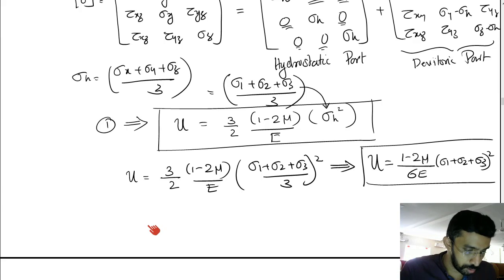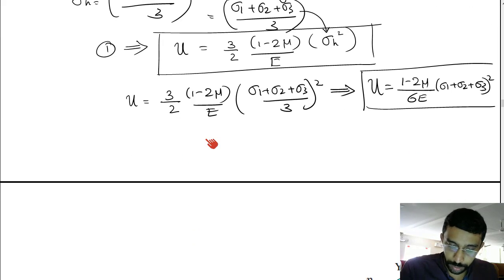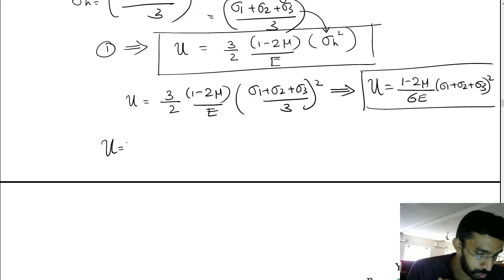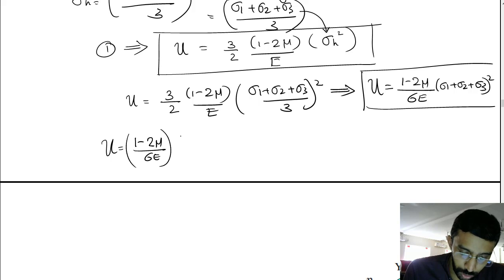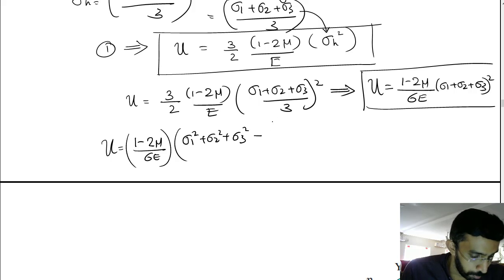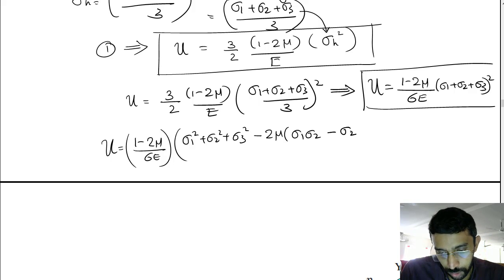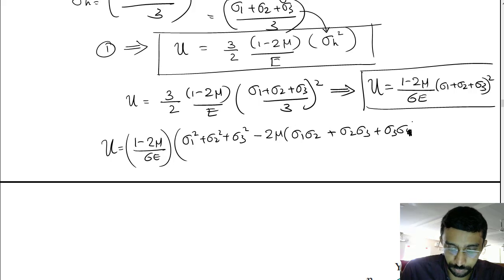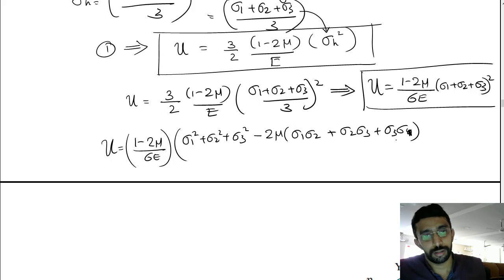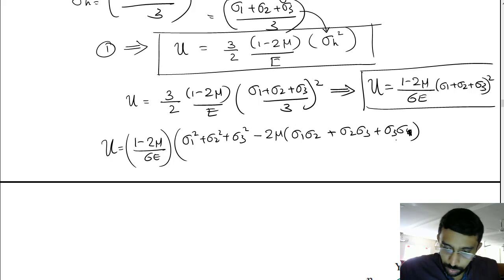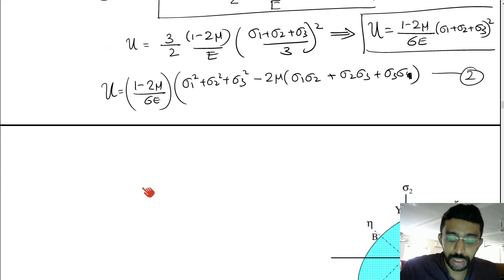Expanding equation 2 gives: u = (1 − 2μ) / (6E) × [sigma 1² + sigma 2² + sigma 3² + 2(sigma 1·sigma 2 + sigma 2·sigma 3 + sigma 3·sigma 1)]. We call this equation 2. Now we define the distortion energy.